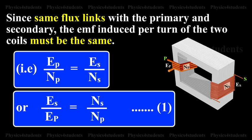Since the same flux links with the primary and secondary, the EMF induced per turn of the two coils must be the same. That is, EP/NP = ES/NS, or ES/EP = NS/NP. This is equation number one.